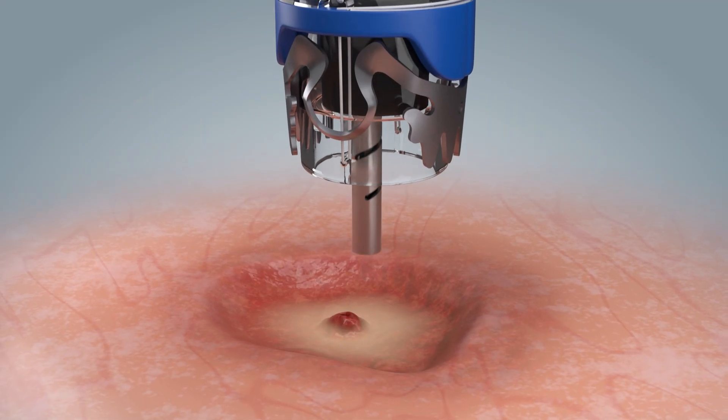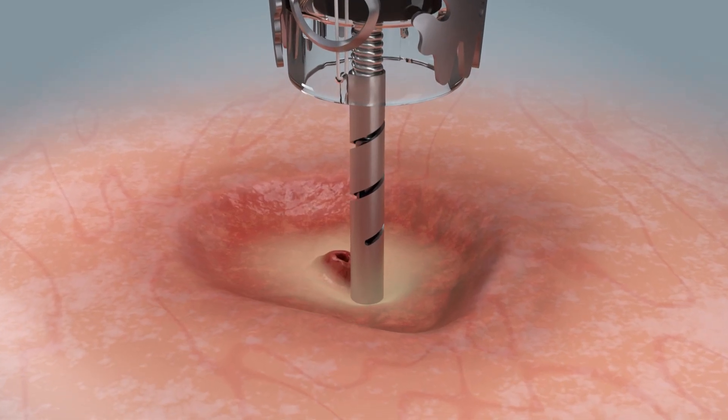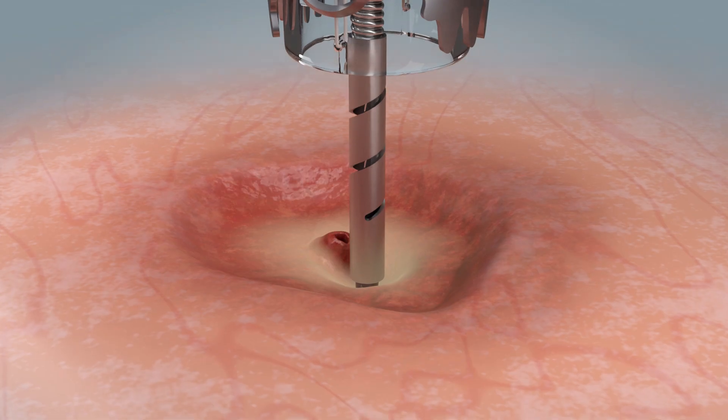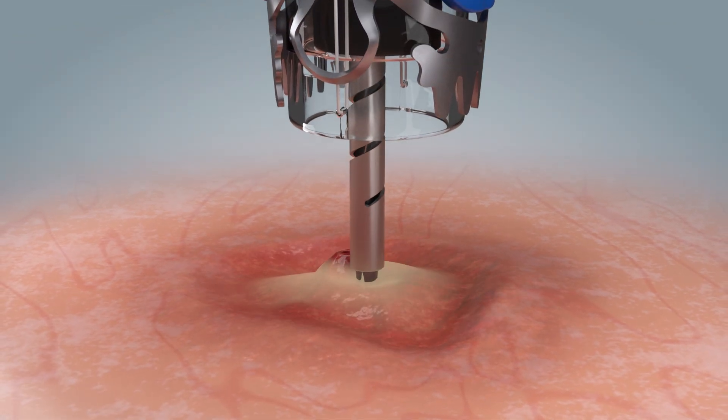Position the anchor so that, when the endoscope working channel is at 6 o'clock, it is also positioned at 6 o'clock, just below the lesion. This allows the lesion to be drawn into the cap space above.